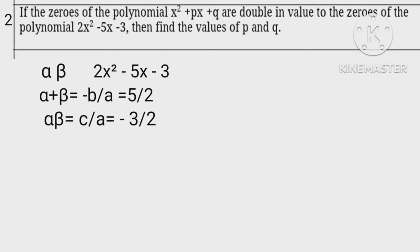Therefore, according to the given condition, let 2 alpha, 2 beta are zeros of x squared plus px plus q. For 2 alpha plus 2 beta equals minus p, implies that 2 times alpha plus beta equals minus p.